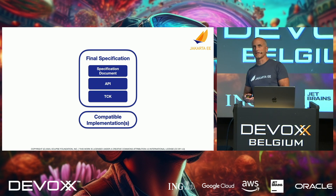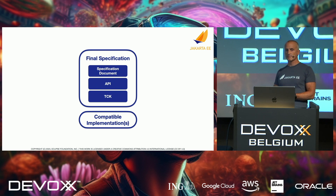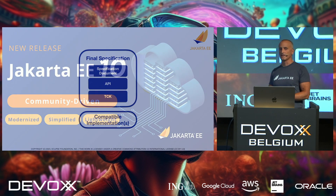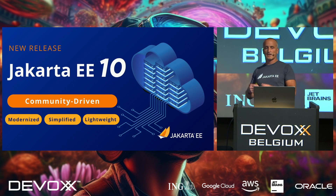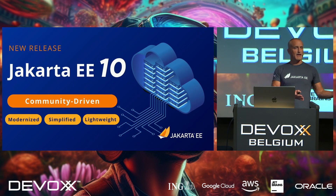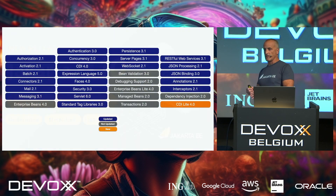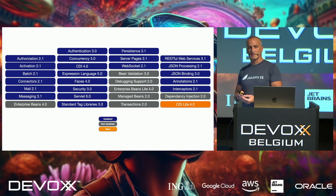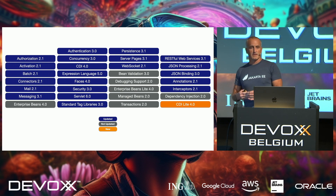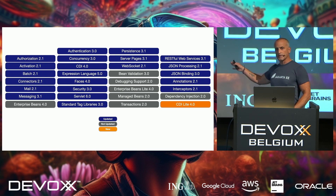An implementation that passes the TCK is what we call a compatible implementation. We need at least one compatible implementation to ratify a final specification, and that implementation has to be open source. Other than that, there can be multiple compatible implementations under any licenses. The current release we have now is Jakarta EE 10 — it's about a year old — and I'm not going to talk about Jakarta 10 here because you're here to hear about Jakarta EE 11.